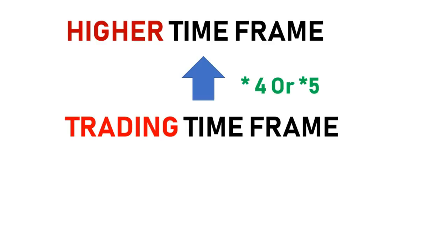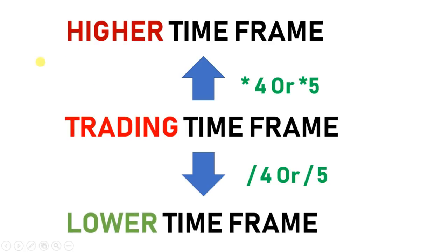In the same book, there is a triple screen strategy. In that strategy, there is also a lower time frame. If the trading time frame is 15 minutes, the lower time frame would be around 3 minutes. If we look at a 4–5 day trading time frame, we have a higher time frame. In the weekly time frame, we have monthly as the higher time frame.